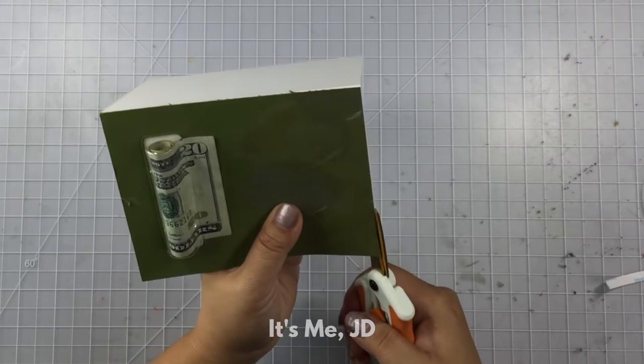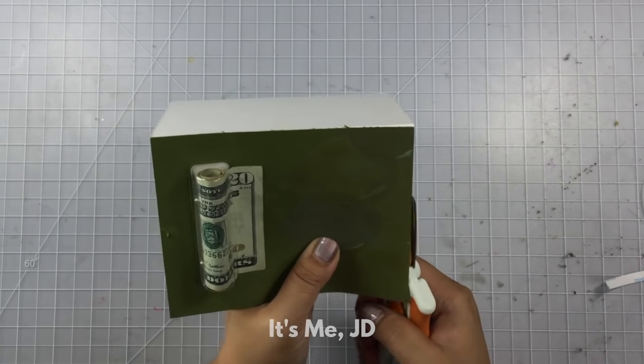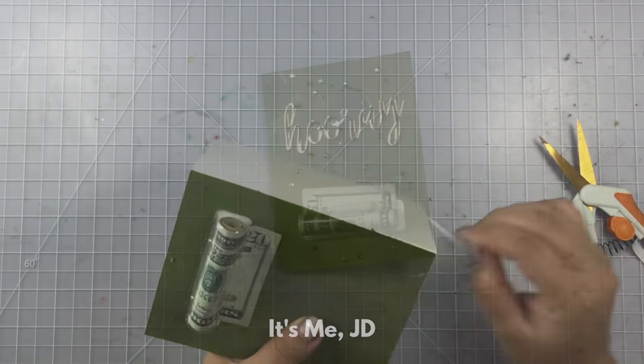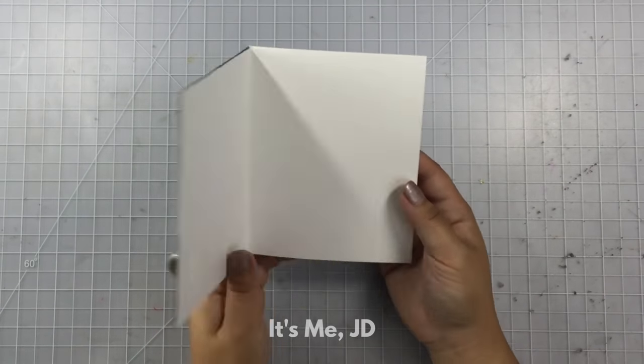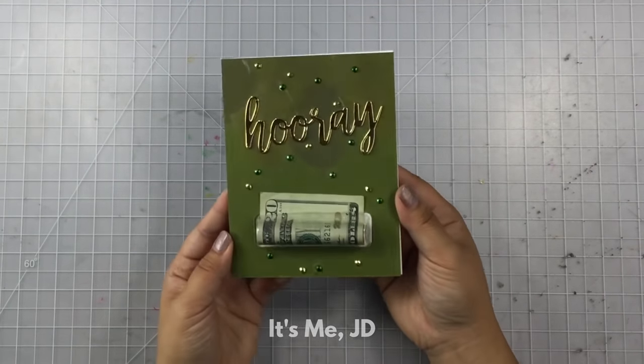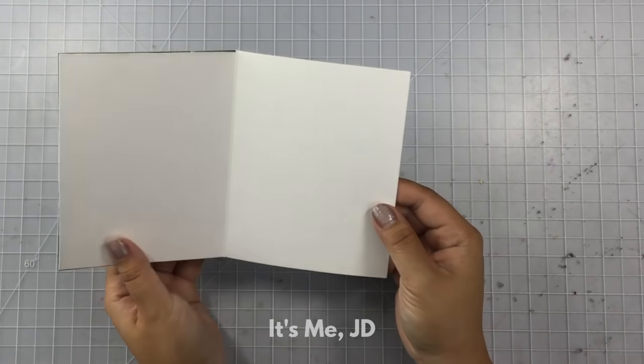And now my cash pouch is on there securely. That money will not fall out unless someone pulls on the edge of that 20. And this is going to go in an envelope anyway. I added a word die cut and some gems to hide my mistake from earlier. And this card is finished.